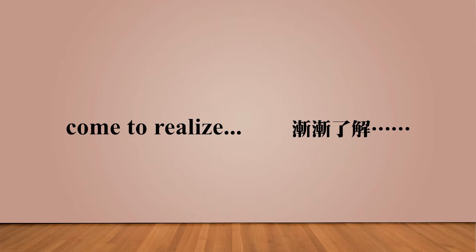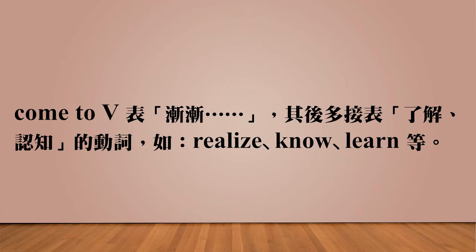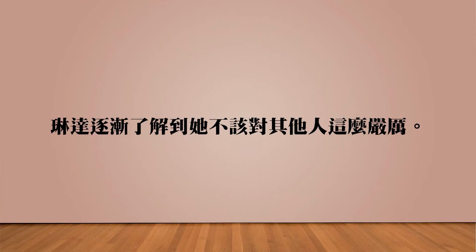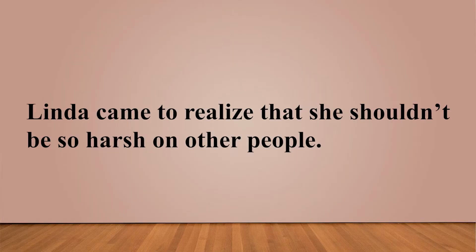第一个重要字词是「渐渐地了解」，可以使用 come to do something，后面动词常是 realize、know、learn，表达慢慢了解到某事。例如：Linda came to realize that she shouldn't be so harsh on other people. Don't be too harsh on yourself 也是口语上常说的，意思是不要对自己这么严苛。